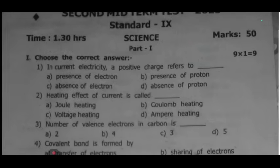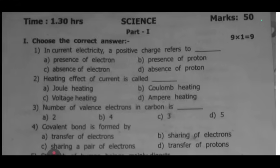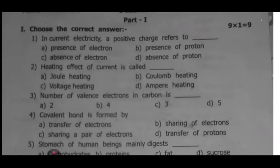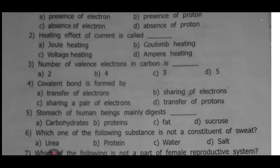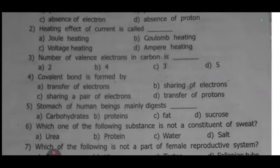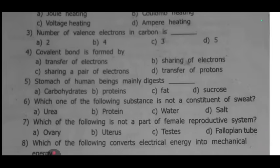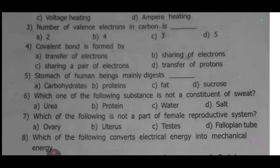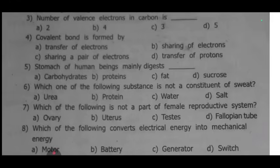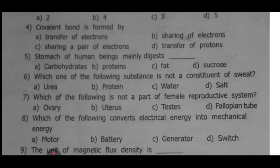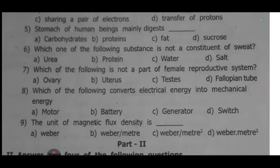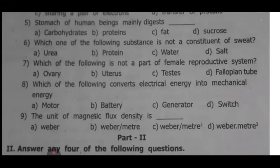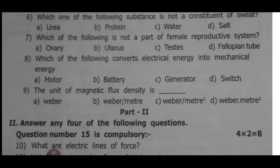Part one — choose the correct answer. First one: in current electricity, a positive charge refers to dash. Second one: the heating effect of current is called dash. Third one: number of valence electrons in carbon is dash. Fourth one: covalent bond is formed by dash. Fifth one: the stomach of human beings mainly digests dash. Sixth one: which of the following substance is not a constituent of sweat? Seventh one: which of the following is not a part of a female reproductive system? Eighth one: which of the following converts electrical energy into mechanical energy? Ninth one: the unit of magnetic flux density is dash.